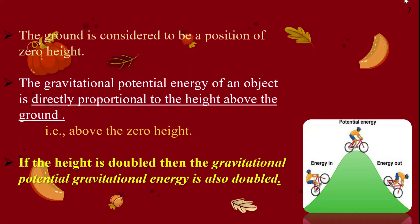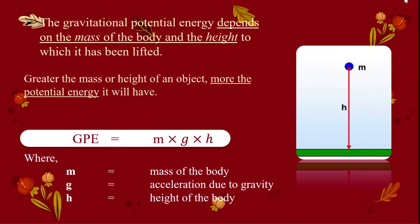The ground is considered to be the position of zero height. The gravitational potential energy of an object is directly proportional to the height above the ground. So if the height is doubled, the gravitational potential energy is also doubled. The gravitational potential energy depends on the mass of the body and the height to which it has been lifted — the greater the mass or height of an object, the more potential energy it will have.